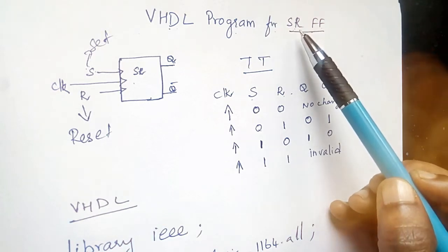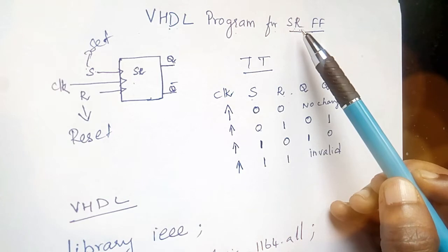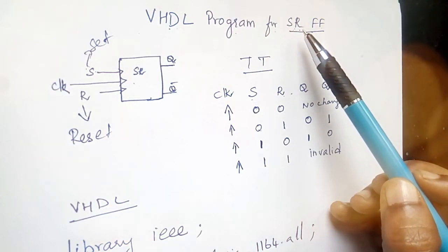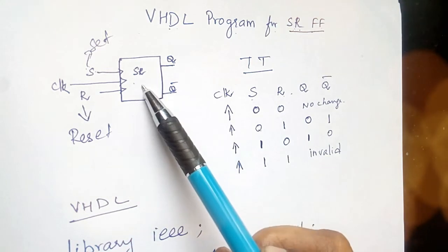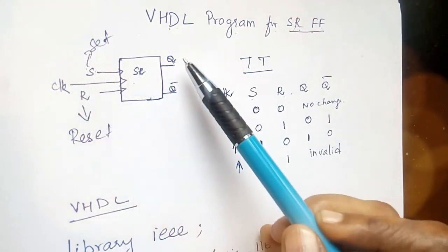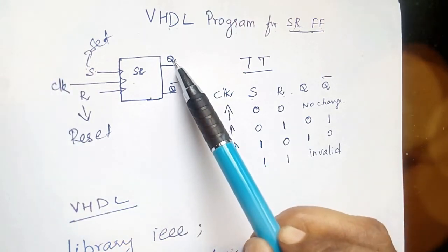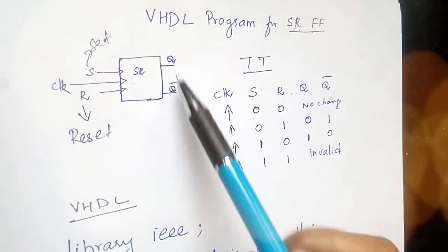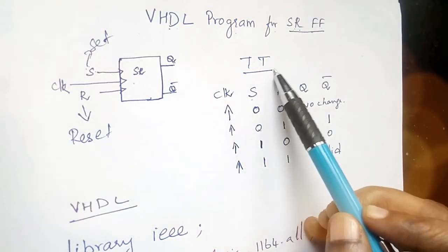We can give a positive or negative clock pulse to retrieve the data from the device. The SR flip flop consists of three inputs: S, R, and a clock signal, and then we have the output Q and the complement Q bar.